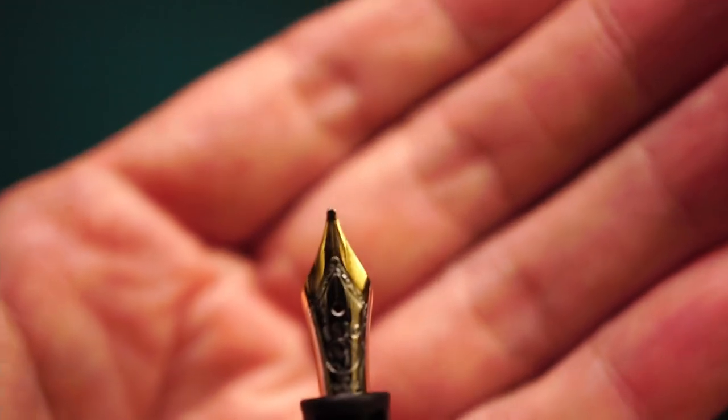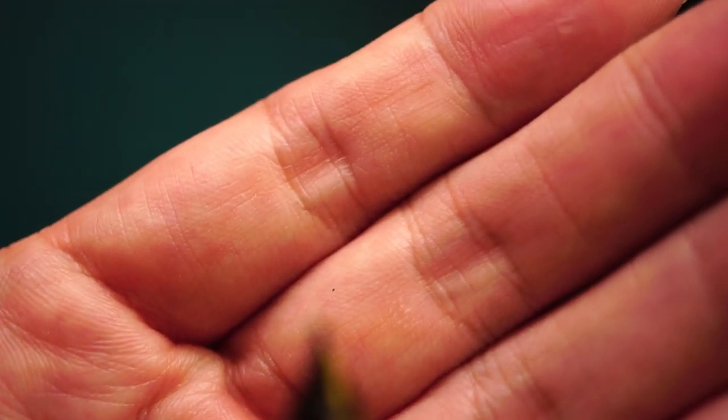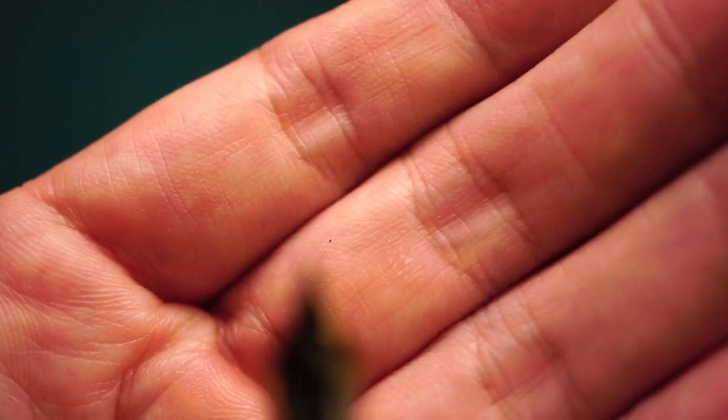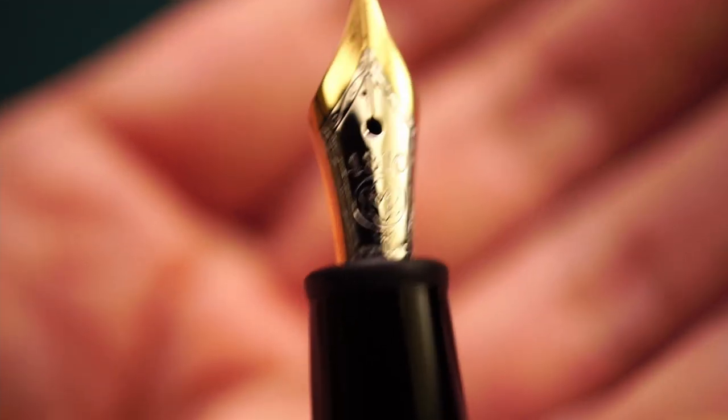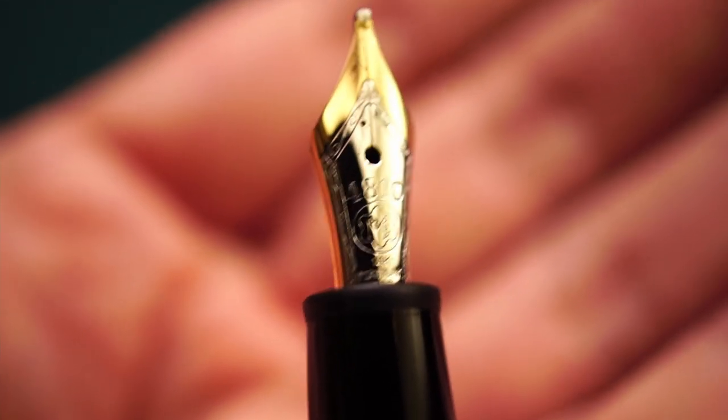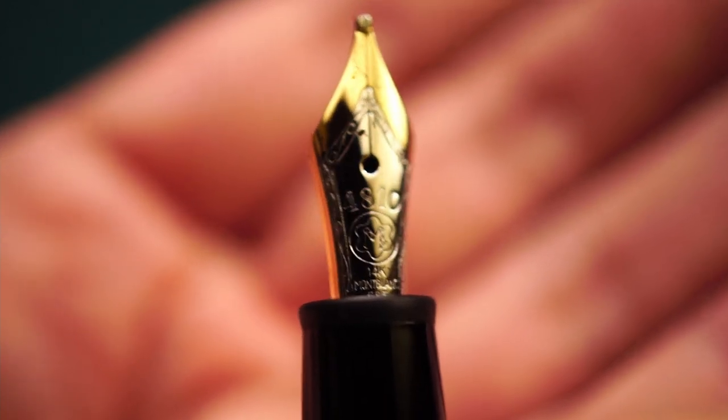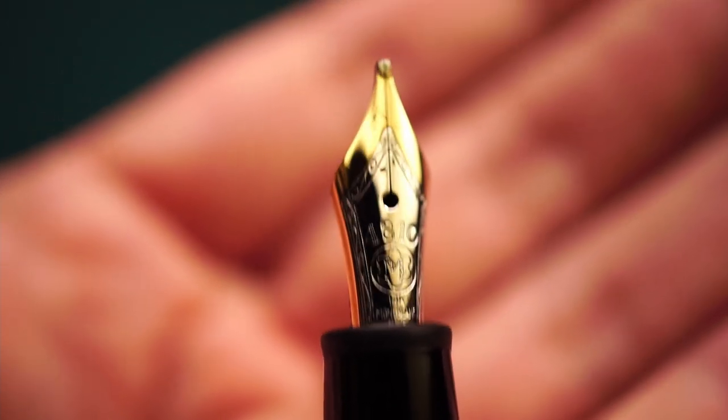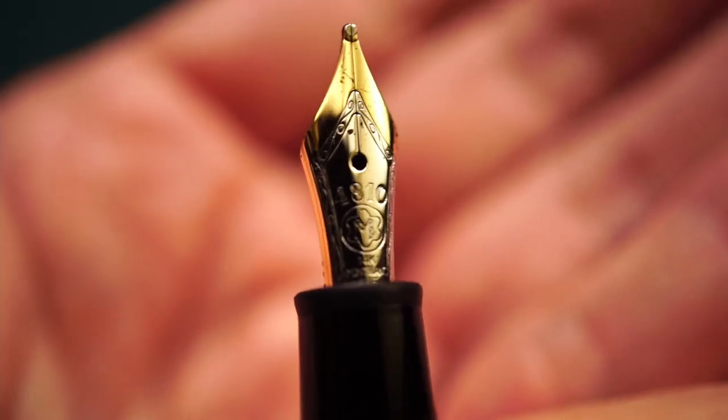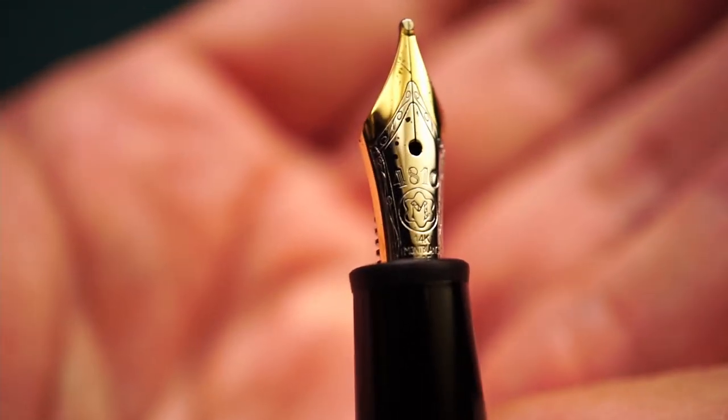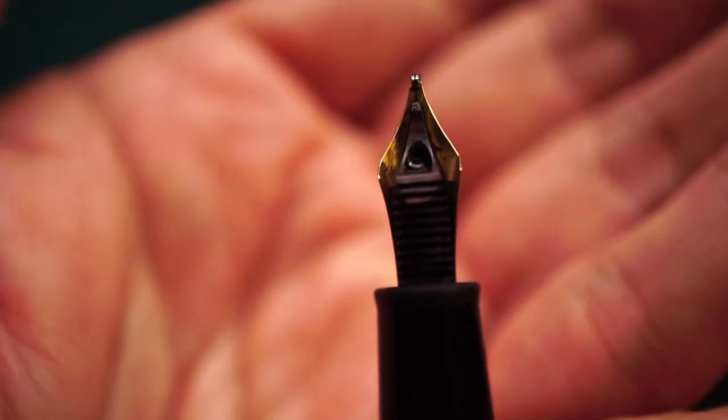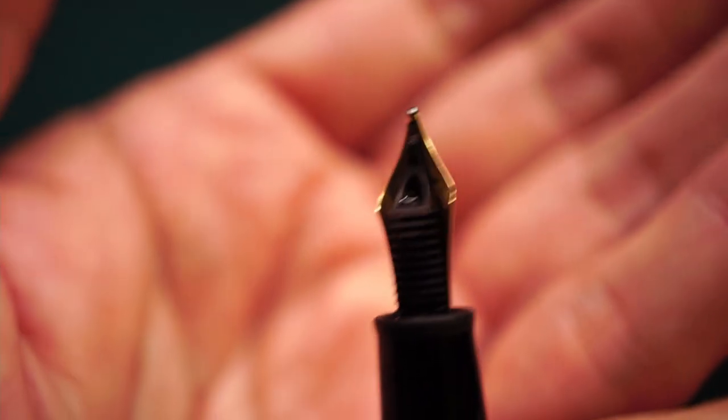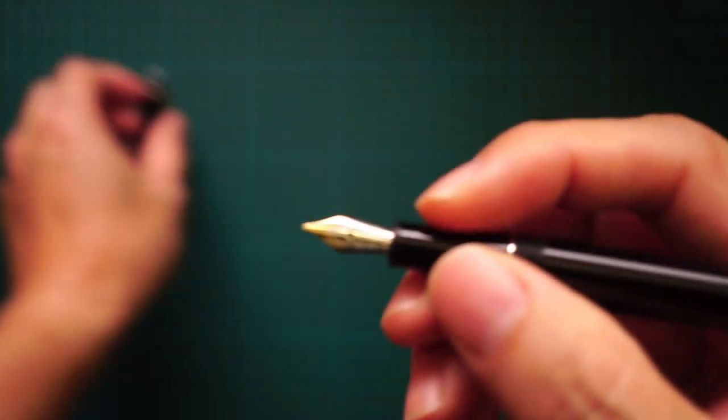And looking at the nib, I can hardly read it myself, but it just says 4810, which is actually the height of the Mont Blanc in Switzerland, which is strange because this is a German brand pen. And underneath you get the feed, which doesn't look anything special, but it's just a normal feed. By the way, this pen is actually in medium.